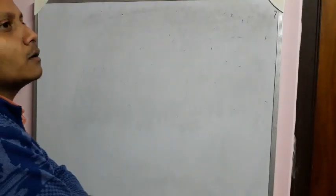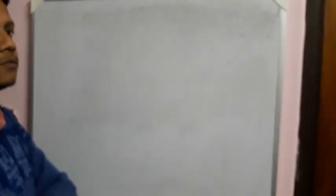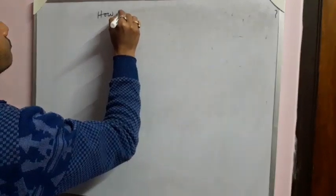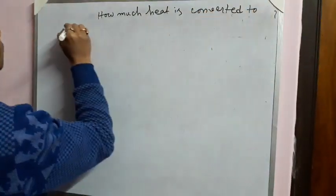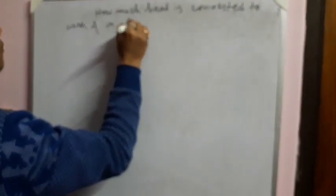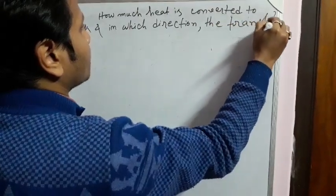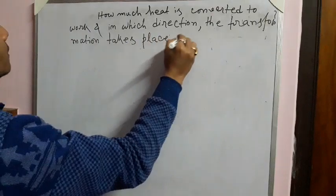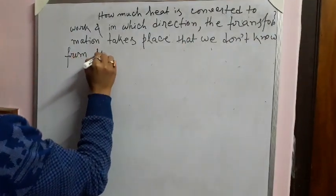Before knowing the second law of thermodynamics, we must know why it comes. We know from the first law that there is a conversion of heat energy into mechanical work, but in which direction the transformation takes place and how much heat energy is converted to work — that we don't know from the first law of thermodynamics. For this reason, the second law is necessary.